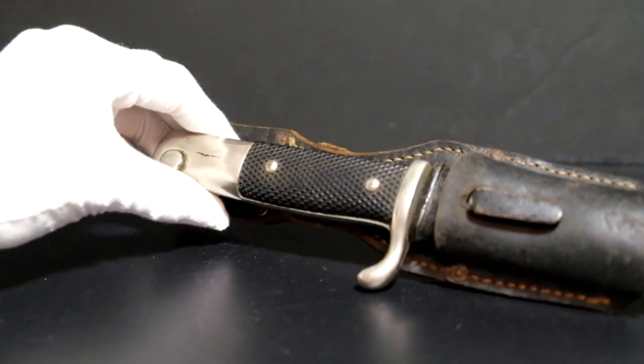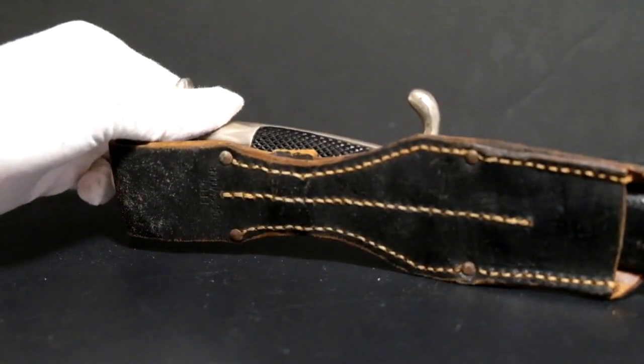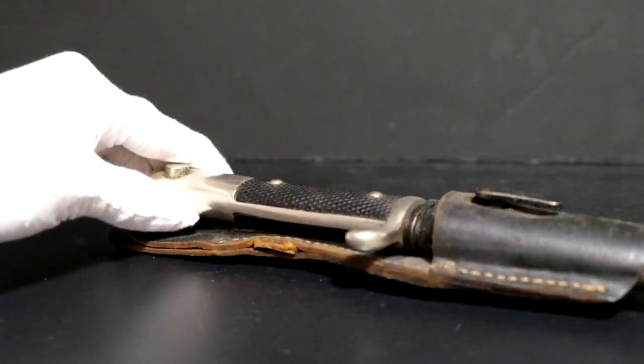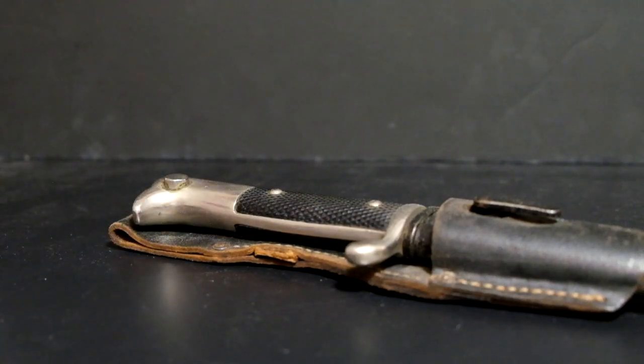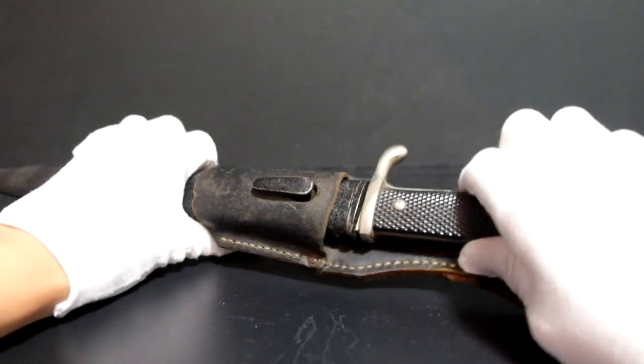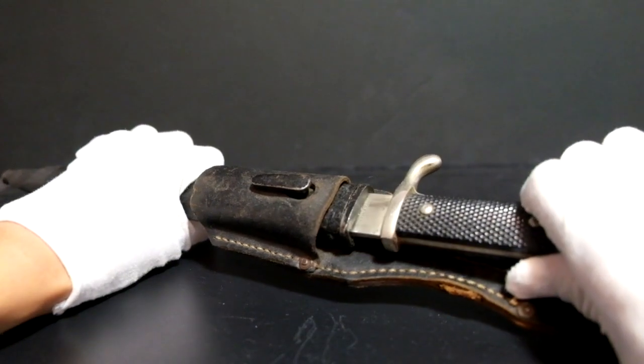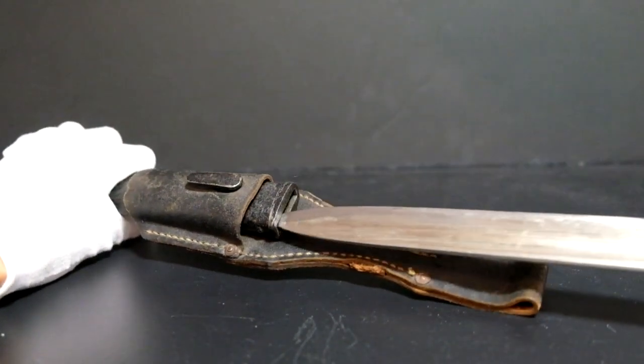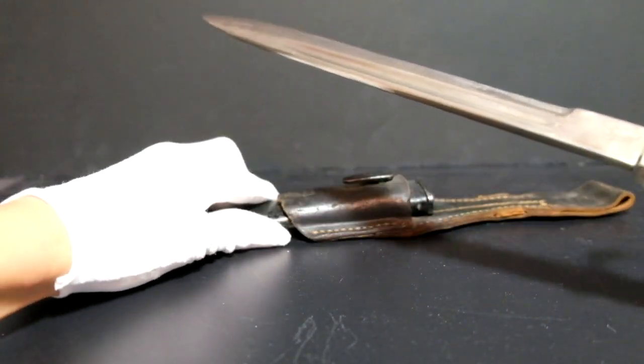Shown here are the nickel-plated hilt and handguard that are unique to this type of German bayonet. As demonstrated here, this bayonet comes quite smoothly out of its sheath, and its blade remains bright.